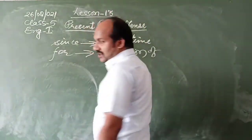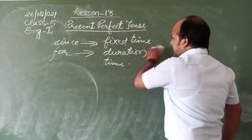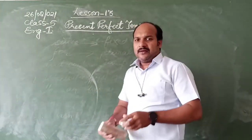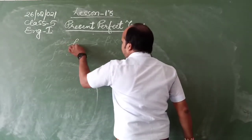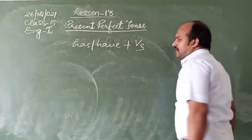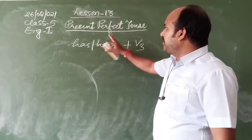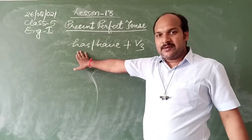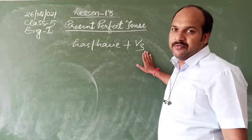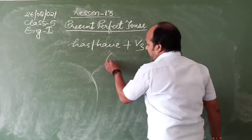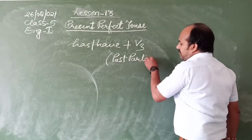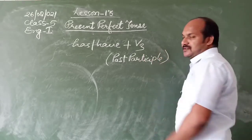Now we come to the structure of this tense. In general, we can say: has or have plus the third form of the verb. 'Has' is used for singular subjects and 'have' for plural subjects. The third form of the verb is called the past participle, which we need to learn from the basic verb forms.